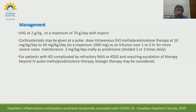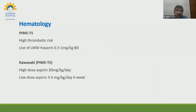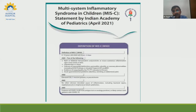Management of MIS-C: IVIG 2 g/kg with aspirin and corticosteroids. Methylprednisolone in a pulse dose of 10 to 30 mg/kg if the child is in shock; if not in shock, maintenance dose of 2 mg/kg per day. If there is no response, consider biological therapies like tocilizumab. For PIMS with toxic shock syndrome, high thrombotic risk warrants low molecular weight heparin at 0.5 to 1 mg/kg per dose twice daily. Aspirin initially at high anti-inflammatory dose then low dose of 3 to 5 mg/kg per day. This is per IAP guidelines published in 2021.